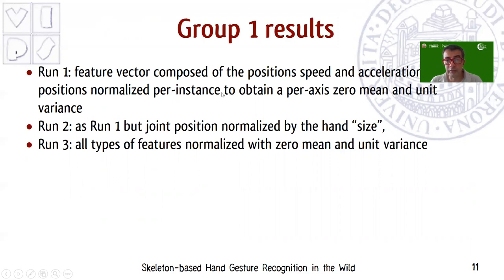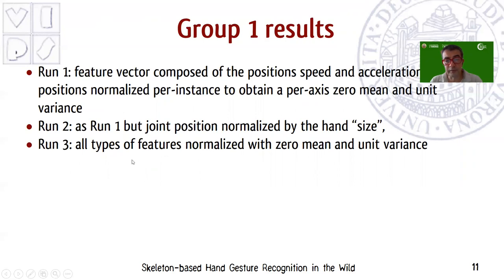The three runs use different normalization strategies. In run one, they used per-instance normalization to obtain zero mean and unit variance per axis for position only. In run two, they also normalized by hand size. In run three, they performed zero mean and unit variance normalization also for the other features.